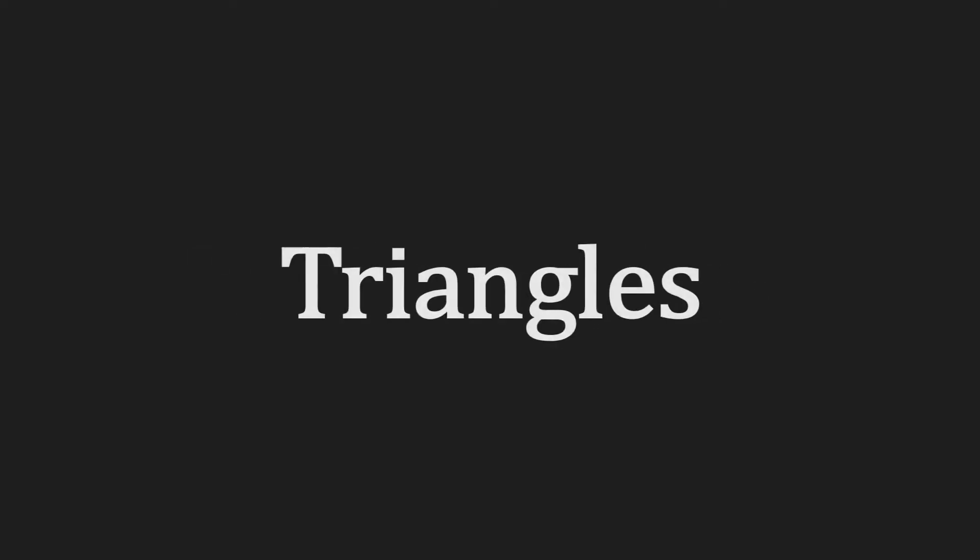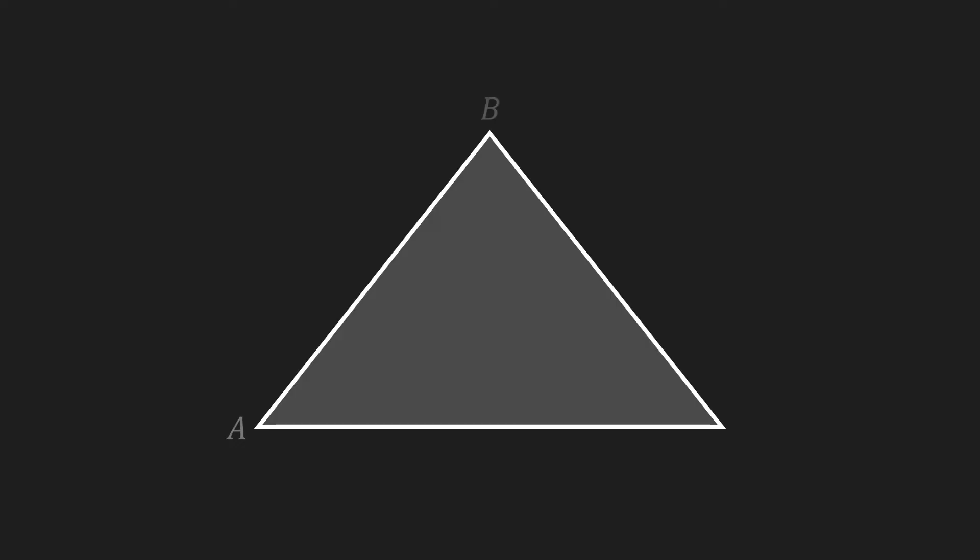To get started we'll have a look at triangles and more specifically their naming conventions. This is a triangle. We name its corners using uppercase letters, for example A, B and C.